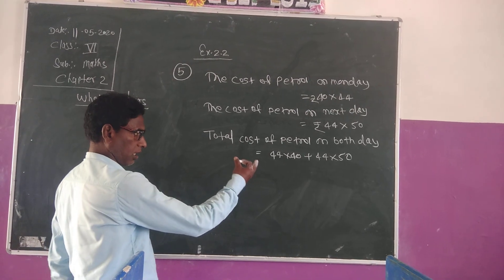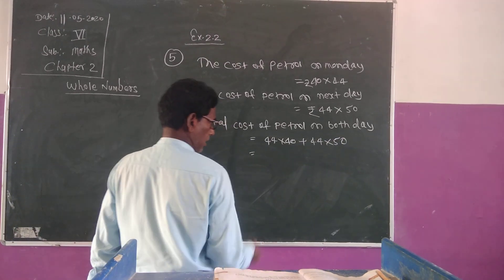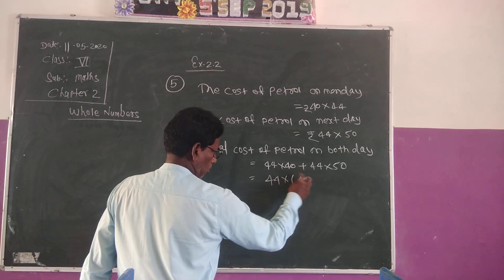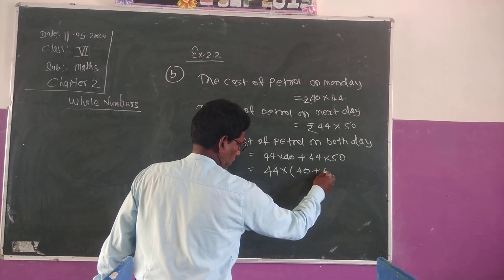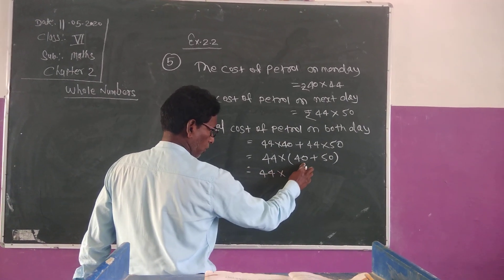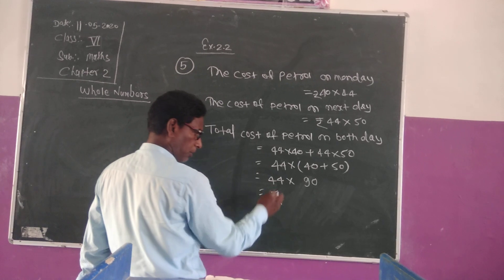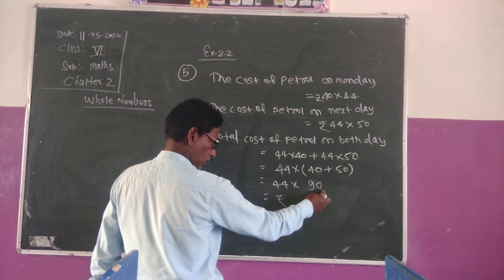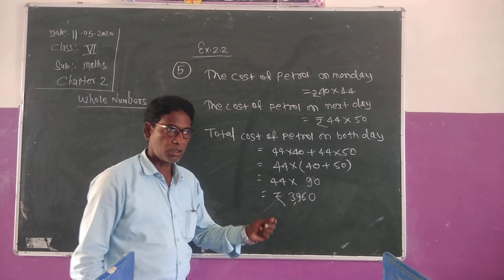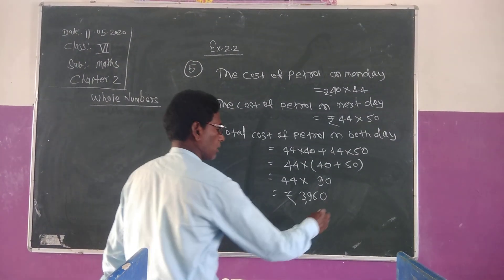Now you will arrange it and solve it. Here we see that 44 appears on both sides. Therefore, 44 into (40 plus 50), which equals 44 into 90. We multiply 44 with 90: result is 3960. 3960 is the total cost of petrol on both days. Answer.